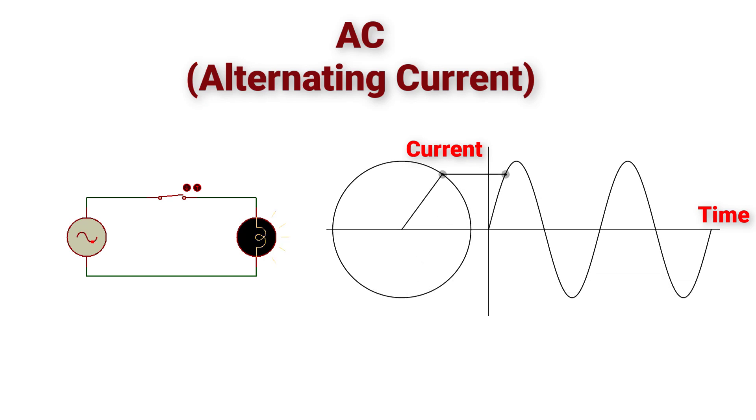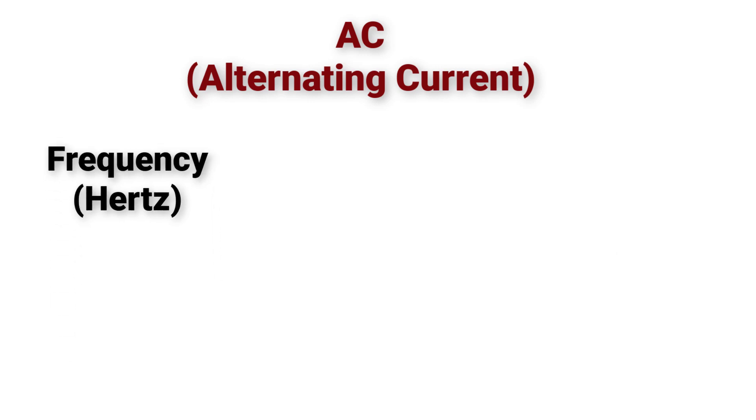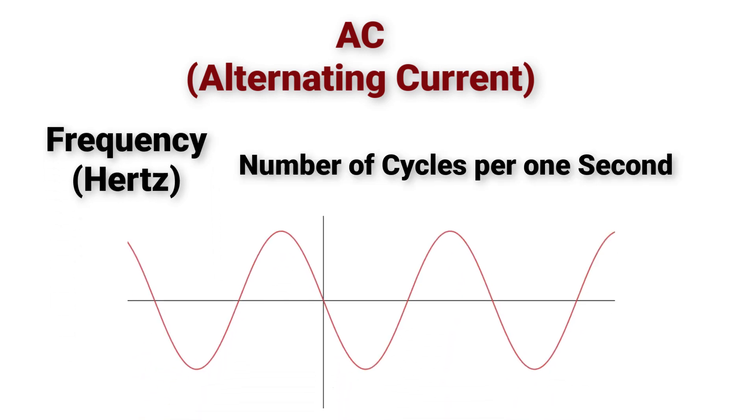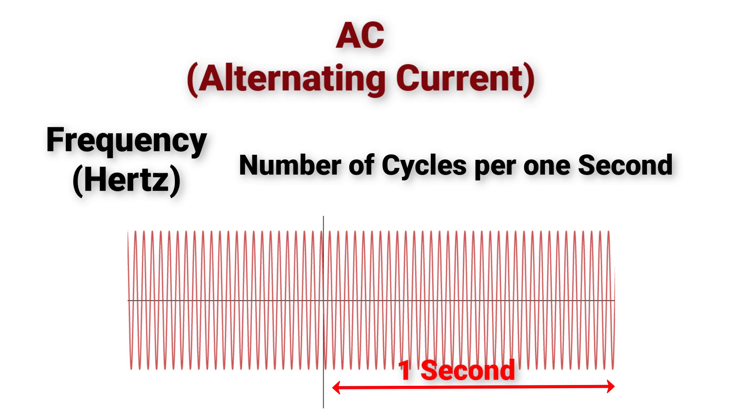This is called a cycle. Here, a new term will appear, which is frequency. Frequency means how many repeated cycles in one second. In my country, I have a 50 Hz power source, which means that these cycles will repeat themselves 50 times in one second.